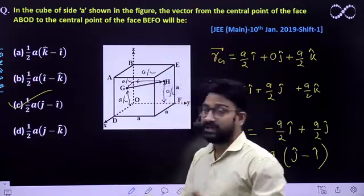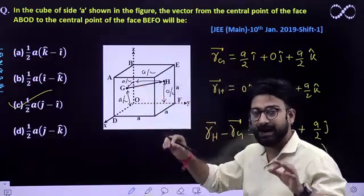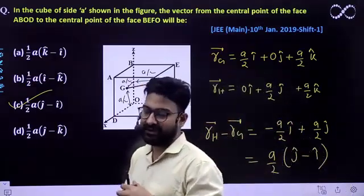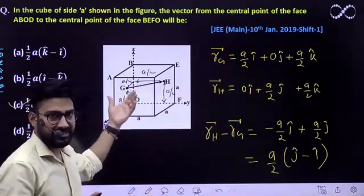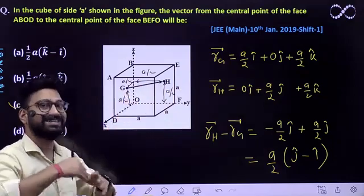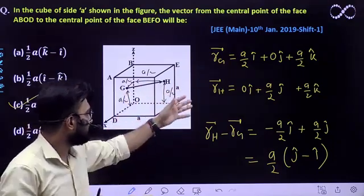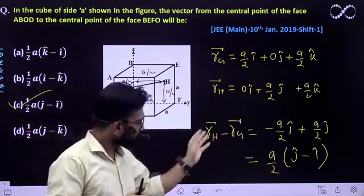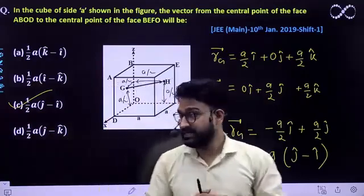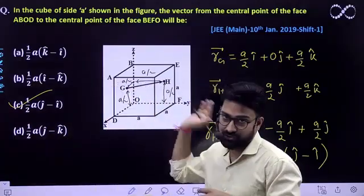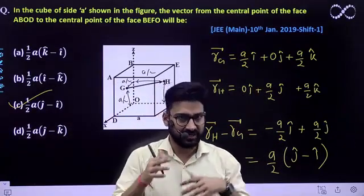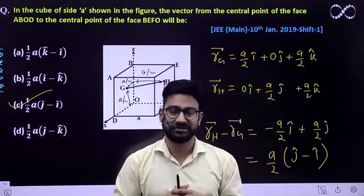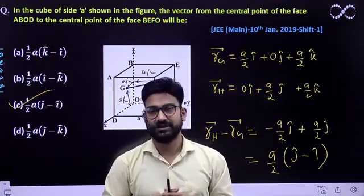I hope this is clear now. First of all, you have to find the position vector of both points, and you can easily find out the position vector by visualizing it along the x, y, z axis - how far they are on the x, y, z axes. From that, find the position vector, and take the difference of these two. You will get the position vector along G to H. This question was very easy. You just have to do a little visualization of vectors, and nothing else. I hope this question is clear. Thank you.